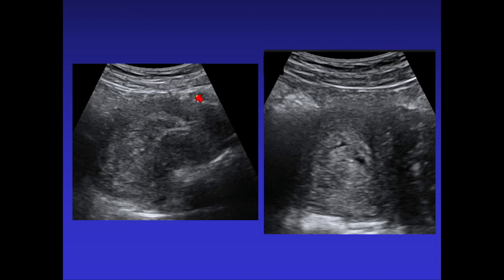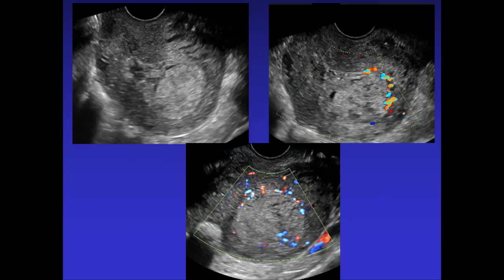We frequently start with a transabdominal scan. If patients have had a C-section, they might have a big dressing on their abdomen, and since you're going to go transvaginal anyway, there's no reason to remove that dressing. We do take transabdominal images just to make sure we're not missing anything large. You can frequently see heterogeneous contents within the endometrial cavity — the question is whether it's blood products or retained products. On vaginal scan of this retroflexed uterus, you can see heterogeneous material, and when you turn on color Doppler, you can actually see flow going into the placental tissue, confirming it as placental tissue.